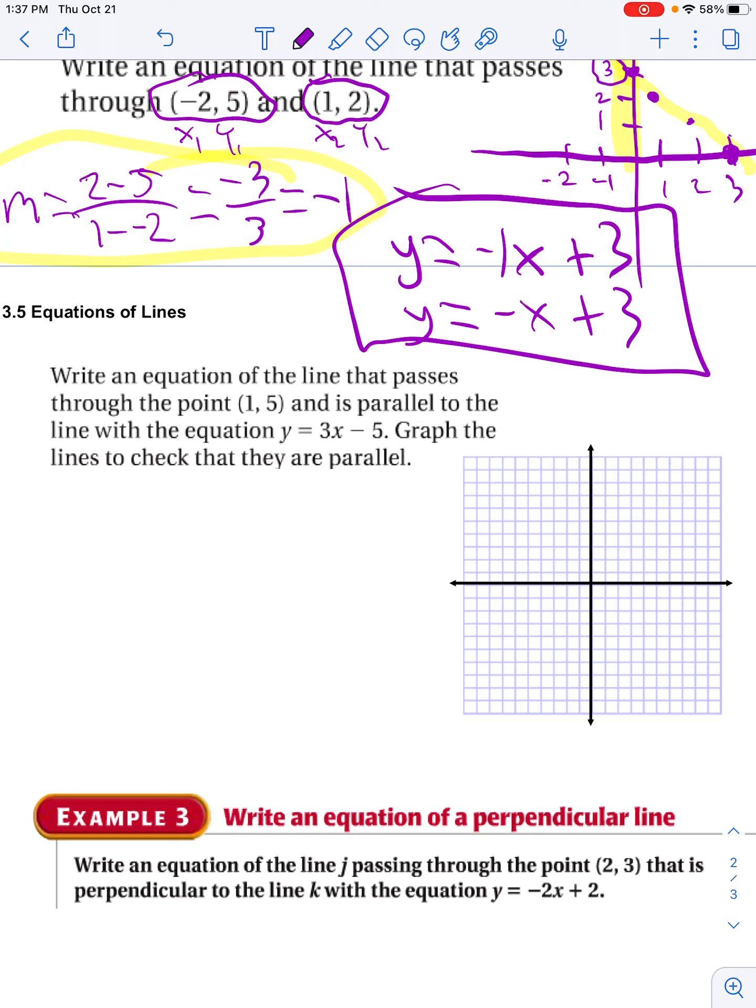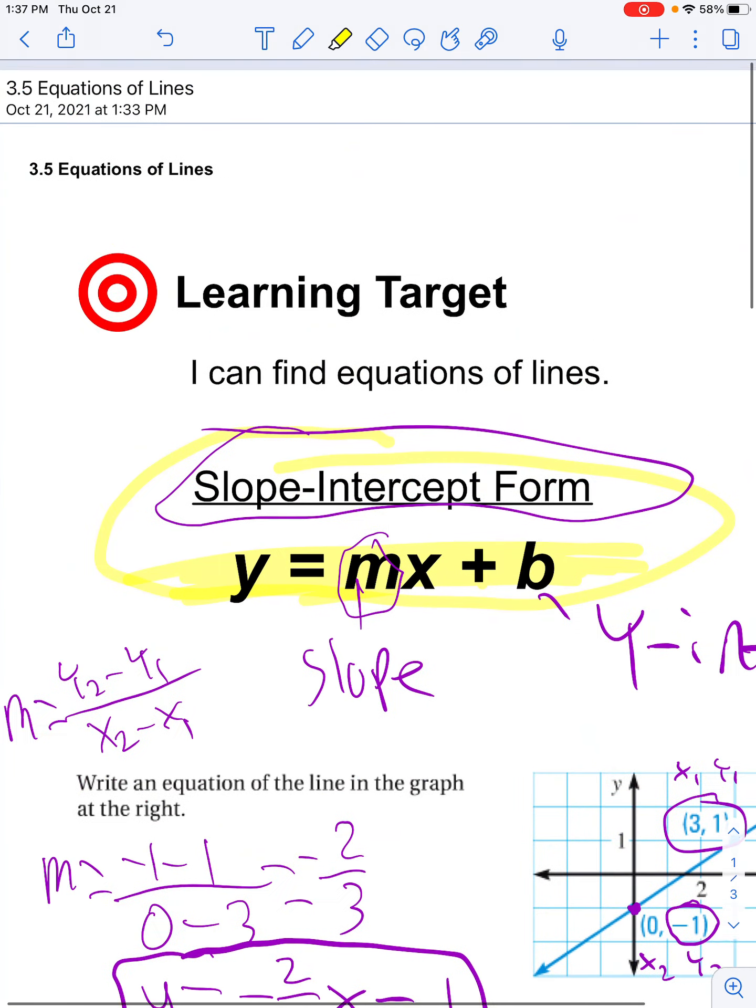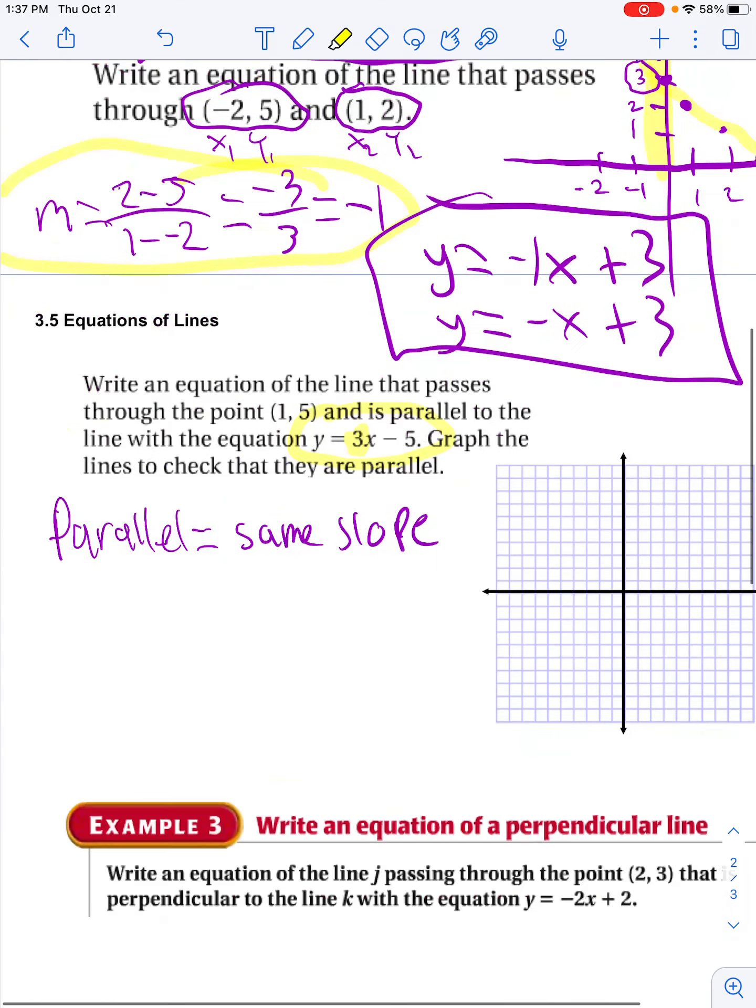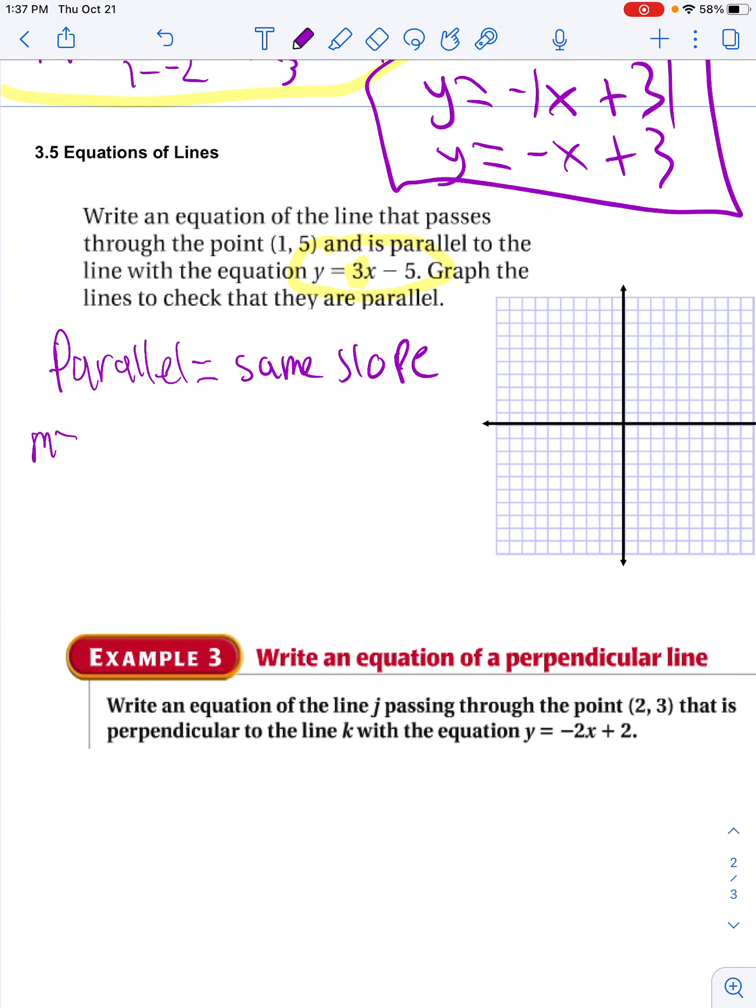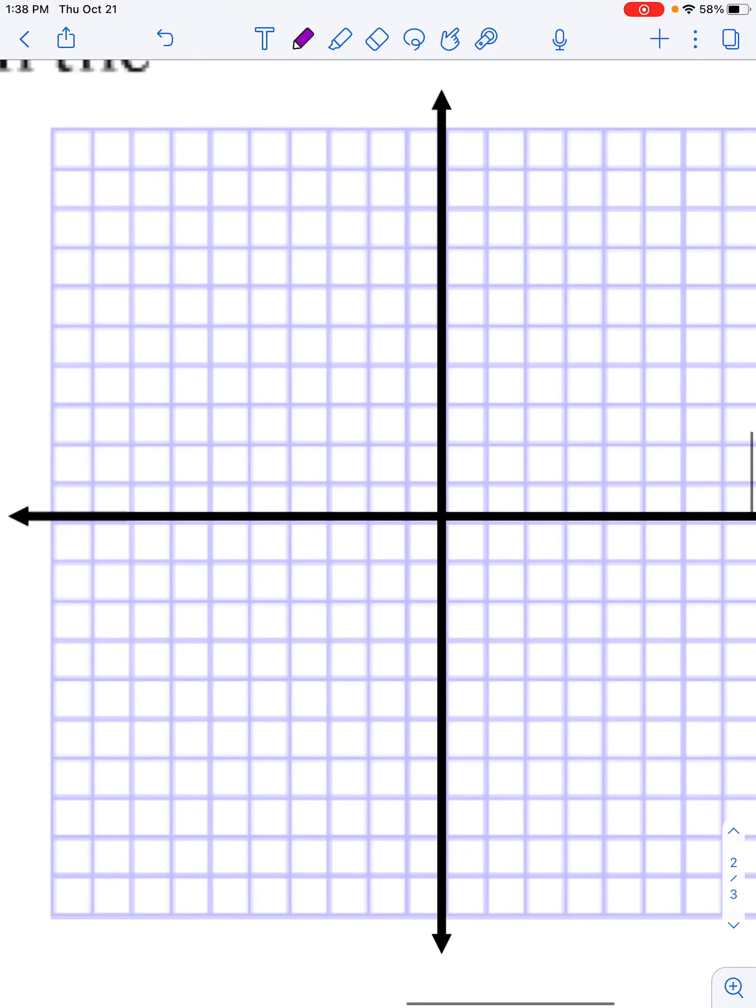Write an equation of the line that passes through the point 1, 5 and is parallel to the line. So keyword parallel means same slope. So if I look at my equation, I see that my slope, according to this, my slope is 3. So I know that my line is going to have a slope of 3. So I'm going to say, alright, I know it has to go through 0.15. So x is 1, y is 5.